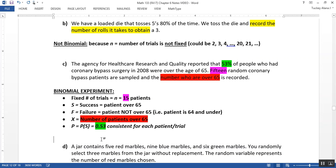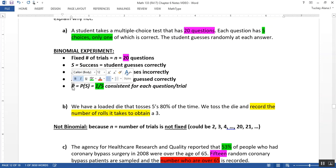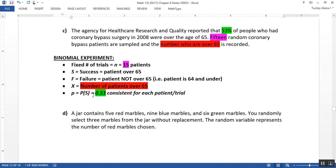We've defined N, S, F, X, and P, P being the probability of success. That should be a lowercase P right there. Lowercase P stands for the probability of success.